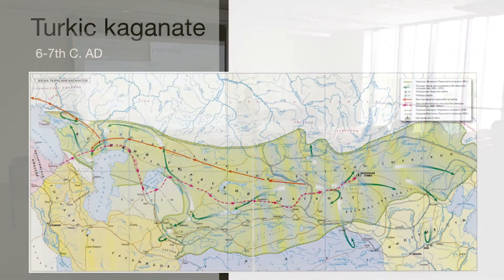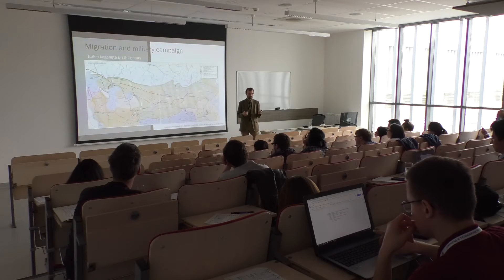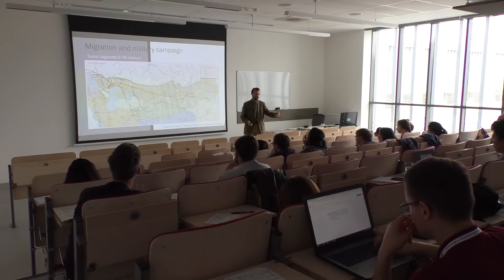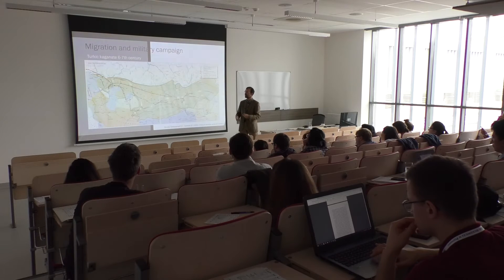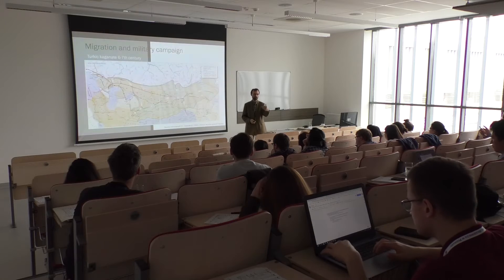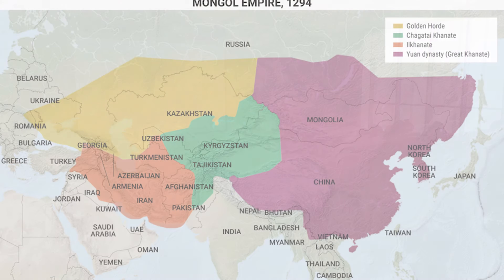Regarding migration: I spoke several times about Turks migrating and making military campaigns and creating migrant waves in Central Asia. You can see another map where Turkic tribes expanded from their initial places of living up to the Central Asian continent. So geopolitical influence through migration and military campaigns. And of course, the most famous geopolitical project in the Middle Ages in this sense might be the Mongolian Empire.